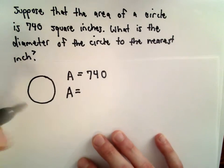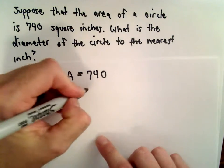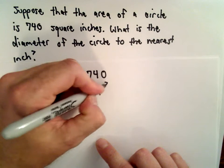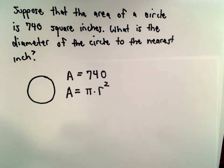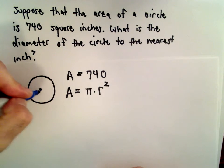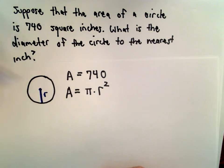Now one thing we'll want to use is the area formula for a circle, and that is pi times the radius squared. Recall that the radius is the distance from the center of the circle out to one edge.